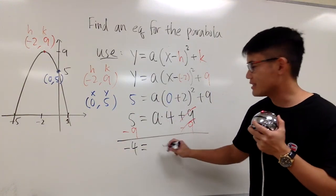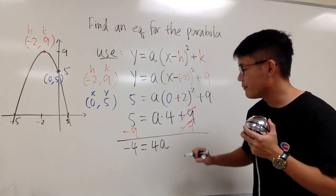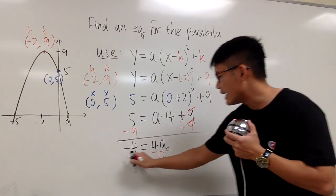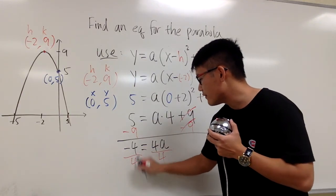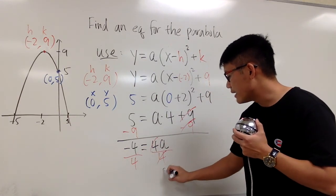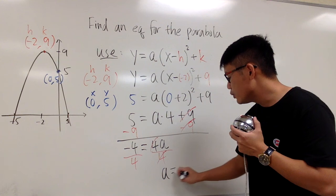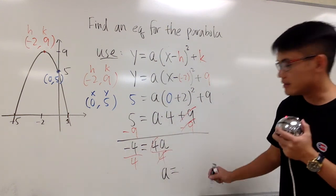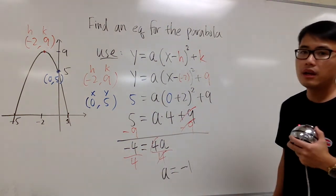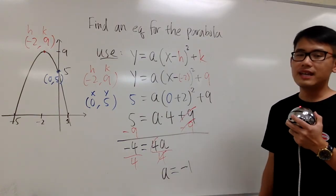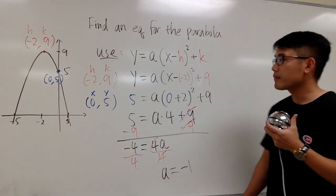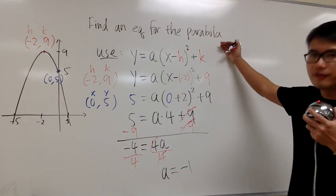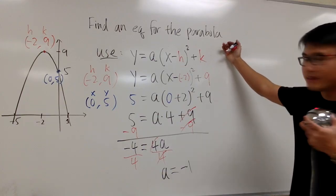I'm going to minus 9 on both sides. They will cancel, and it looks like we have 5 minus 9, that's negative 4, and this is equal to a times 4 — let me write this as 4a. To solve for a, all I have to do is divide both sides by 4. A is by itself, it's equal to negative 4 over 4, and a is equal to negative 1. We have all the ingredients that we need now.